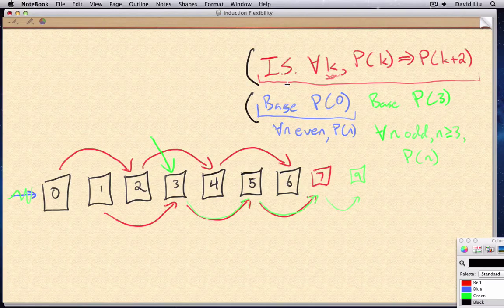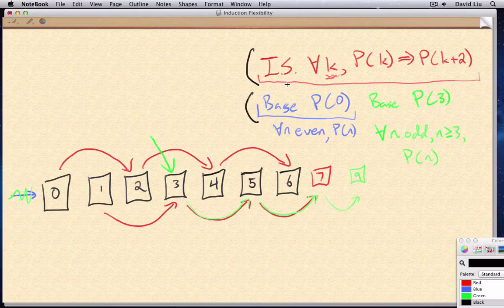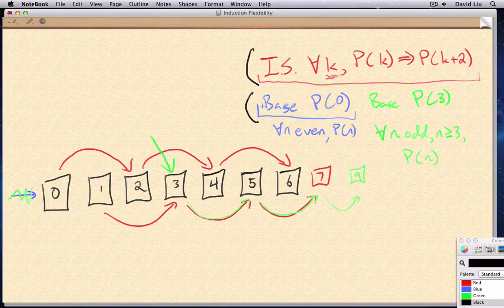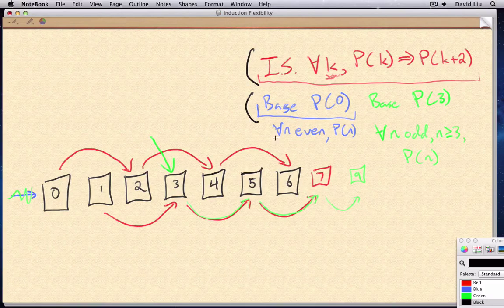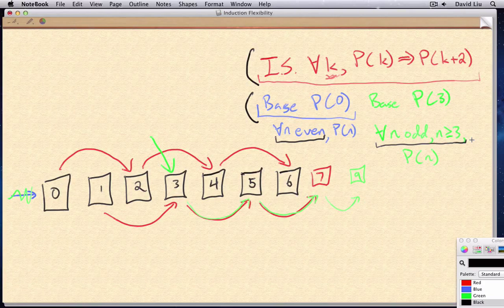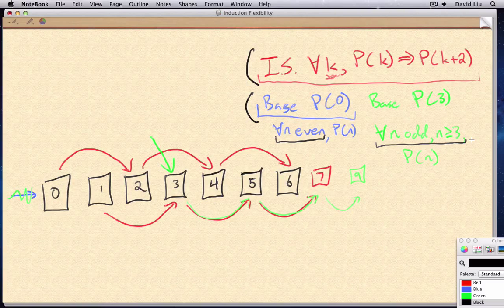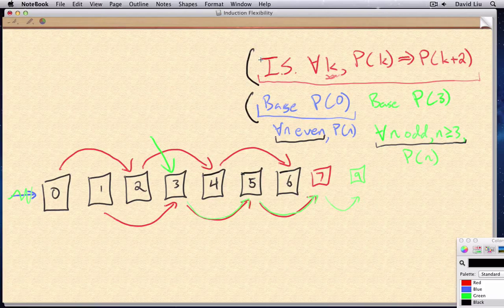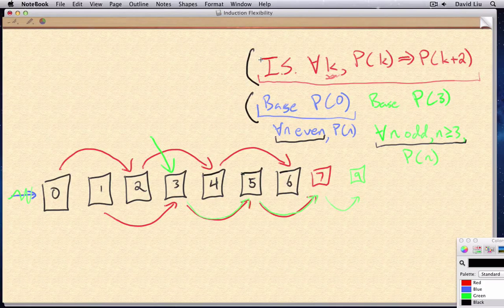The second and arguably more important lesson is, depending on what the base case and the induction step are, we can control what set of numbers we're proving something about. Or, conversely, if we're given a question which requires us to prove something about only a subset of the natural numbers and not all of them, then we can take that into account simply by modifying our base case and or modifying our induction step.